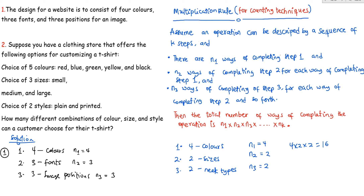The total number of ways of producing the website design equals n1 times n2 times n3, which is four times three times three, giving us 36. So there are 36 different ways to produce a website design.